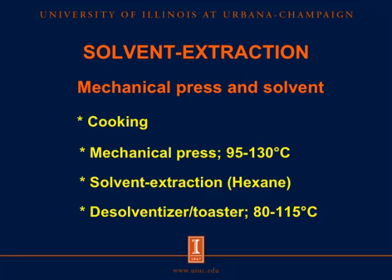For solvent extraction, they use both mechanical press and solvent to remove oil. They cook canola and rapeseed before moving them to a mechanical press to remove 60 to 70% of oil. Then the rest of the oil is removed in a solvent extraction step using hexane. After that, the meal is moved to a desolventizer and toaster to recycle hexane back for reuse in the solvent extraction step.